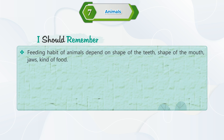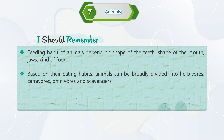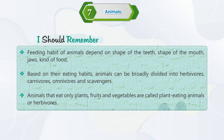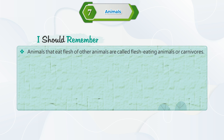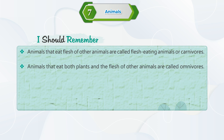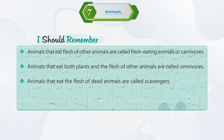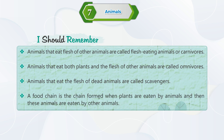I should remember. Feeding habits of animals depend on the shape of their teeth, shape of the mouth, jaws, and kind of food. Based on eating habits, animals are divided into herbivores, carnivores, omnivores, and scavengers. Animals eating only plants are herbivores; those eating flesh are carnivores; those eating both are omnivores; those eating dead animals are scavengers. A food chain is formed when plants are eaten by animals and those animals are eaten by other animals.